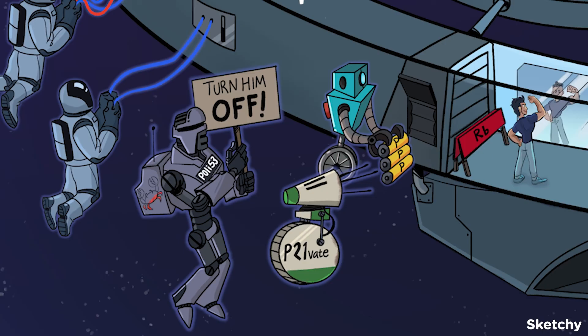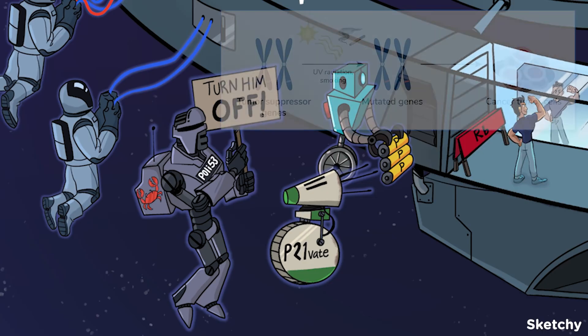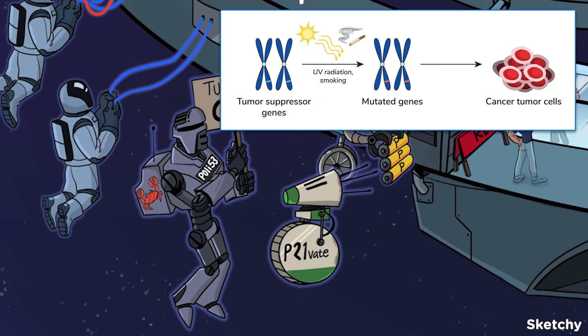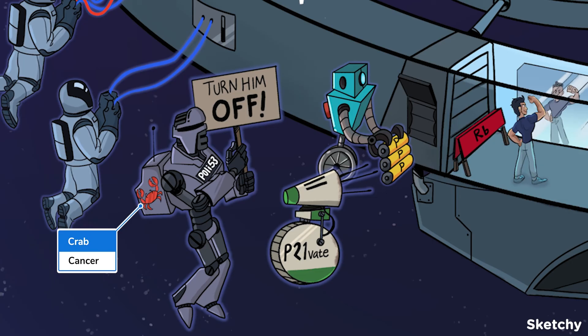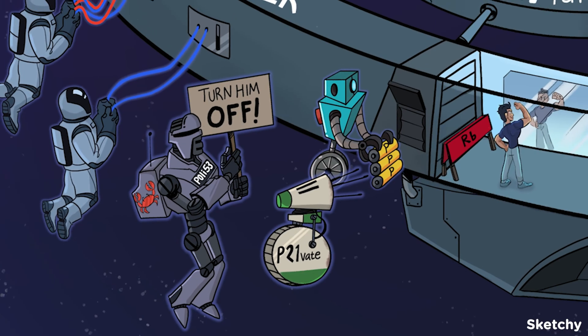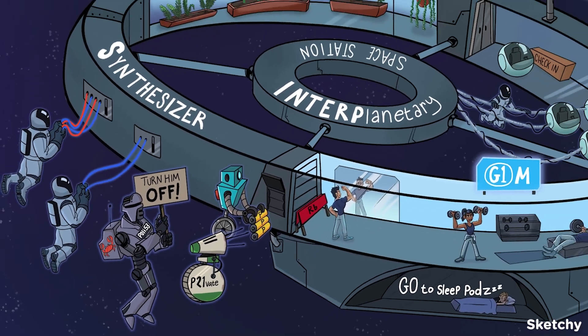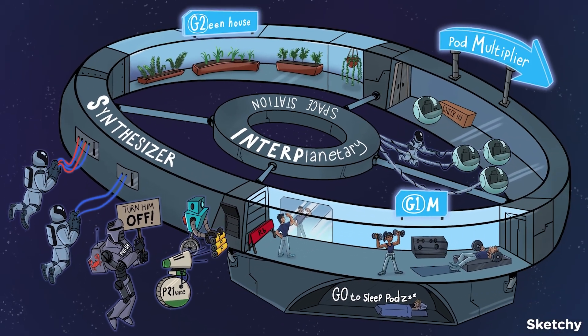As you probably know, mutations in tumor suppressor genes result in uncontrolled cell proliferation leading to cancer. That means a mutation in the pathway above — like in the P53 gene — can lead to loss of cell cycle regulation. Time to get out of here, but first, a short outro.